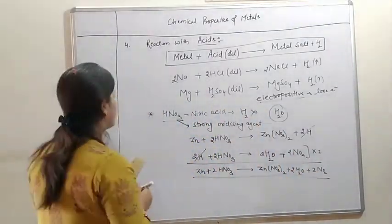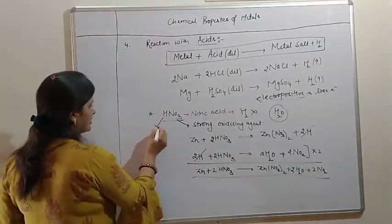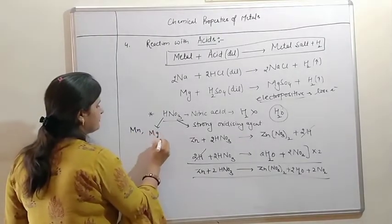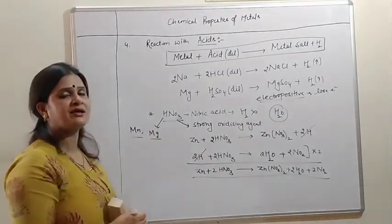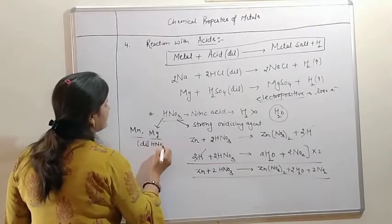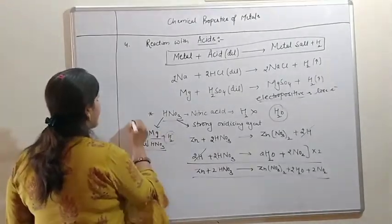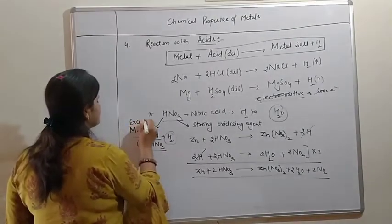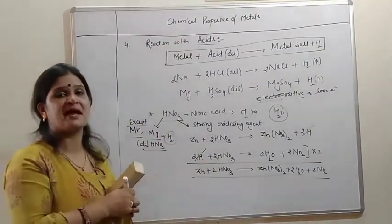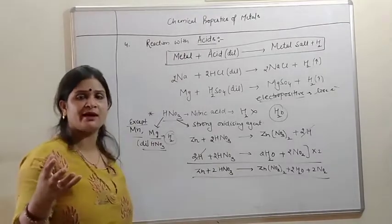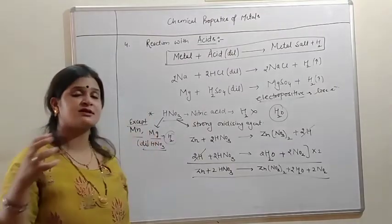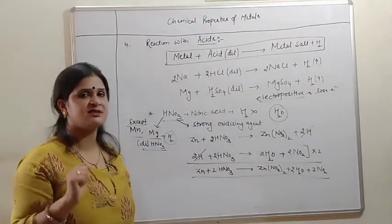But there are two exceptions with nitric acid: manganese (Mn) and magnesium (Mg). These are two metals which react with dilute nitric acid and they release hydrogen gas. These are the exceptions. This point is very important.